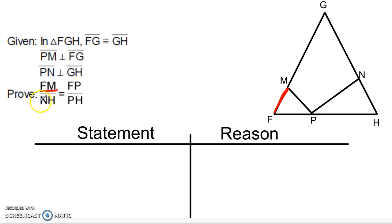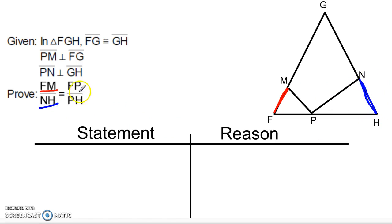Now I look at the next piece, NH. I'm going to ask myself: could NH possibly be in the same triangle as MF? Hopefully you can see that there's no way that can happen. NH is in fact only in this triangle over here, and that's not the same triangle that MF is in. So I'm going to give NH a different color — blue. So FM is red, NH is blue. That's going to be my other triangle. Then I go to the next piece, FP. I go back to the triangle and ask myself: can FP be in the same triangle as this red piece? Well, obviously it can — FMP. But I also want to ask myself, can FP be in the triangle with the blue piece? Here you can see that they cannot be. FP is a different triangle than this blue one.